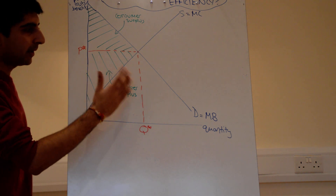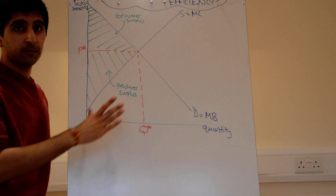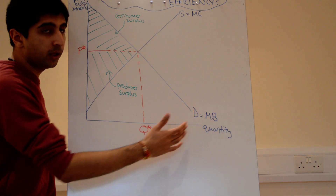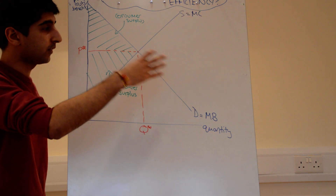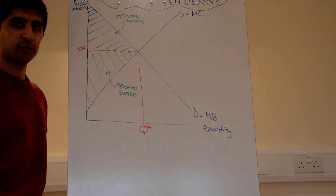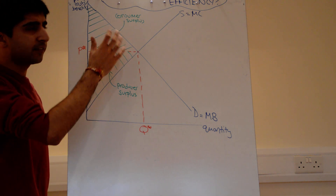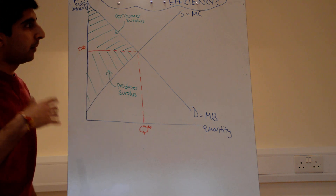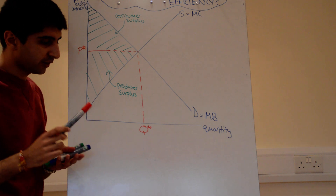I'm also assuming in this diagram that there are no externalities. So when we talk about marginal benefits here, we're also looking at marginal social benefit and marginal social cost. This is assuming no externalities in production or consumption. This is a difficult concept to understand, but now it should make logical sense.